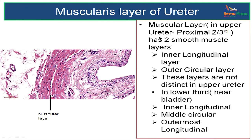In the upper ureter, which is the proximal two-thirds, there are two layers of smooth muscle: inner longitudinal layer and an outer circular layer. But these layers are not very distinct in the upper ureter.